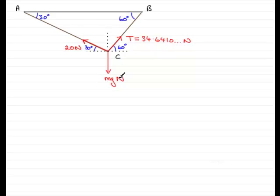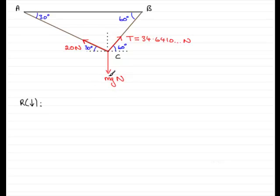Now we've got to find the mass M, so to do this what I'm going to do now is resolve in the vertical sense. And I'm going to select downwards as positive. It doesn't matter which way you select as positive, upwards or downwards, but I've chosen downwards purely because I want to have the weight Mg as positive in my equation.